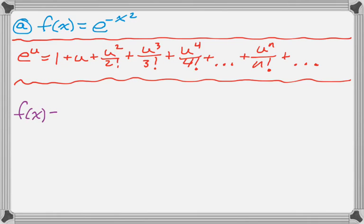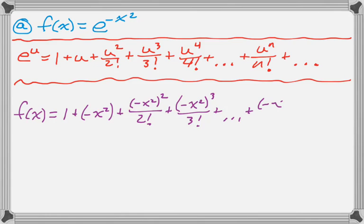So in this case I need to find, I'm going to replace all the u's with negative x squared. So I just do that, direct substitution, nothing too complicated. So I need the first four non-zero terms and I need the general terms. That's what I've written out.